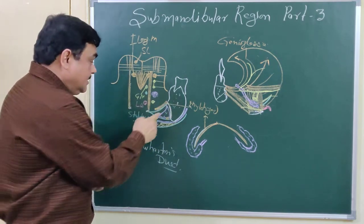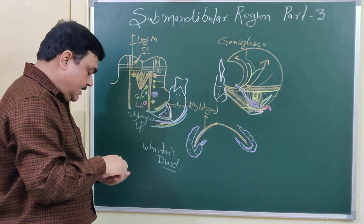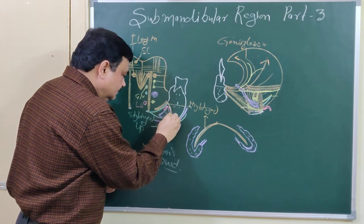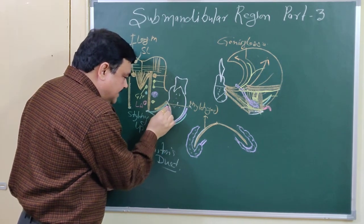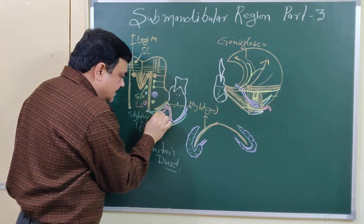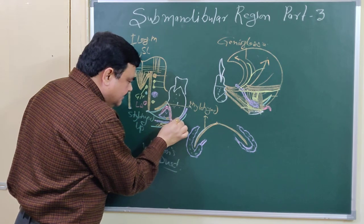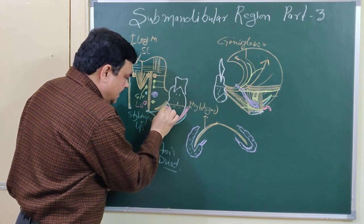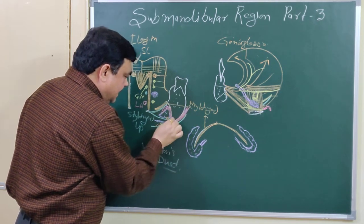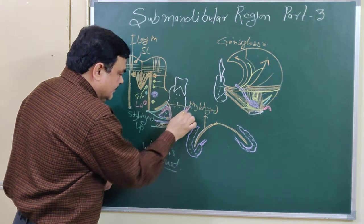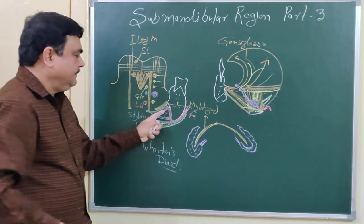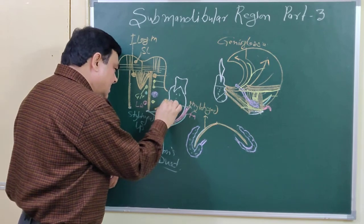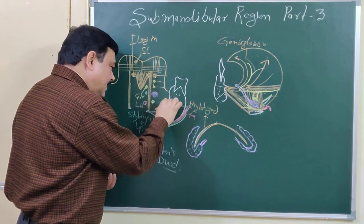On the lateral surface, a fossa is present — this fossa is known as the submandibular fossa. Here the facial artery is present. The facial artery first turns on the lateral side and then comes onto the face. The facial artery courses through this fossa.